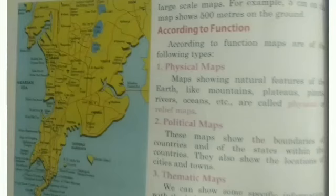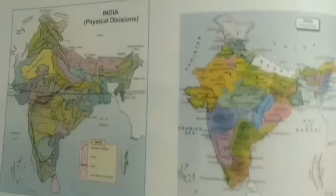Thematic maps: we can show some specific information with the help of thematic maps — for example, road maps, rainfall maps, maps showing distribution of forests, industries, mines, etc. There are three main components of a map: distance, direction, and conventional signs or symbols.